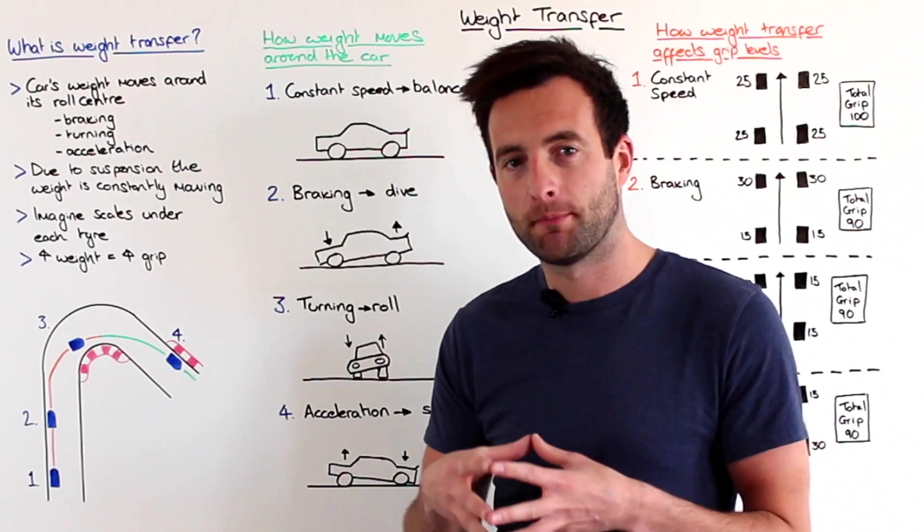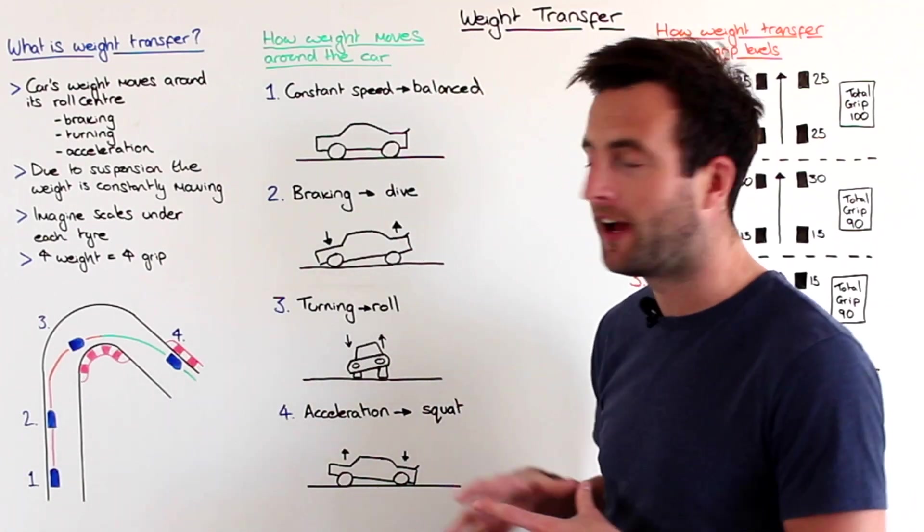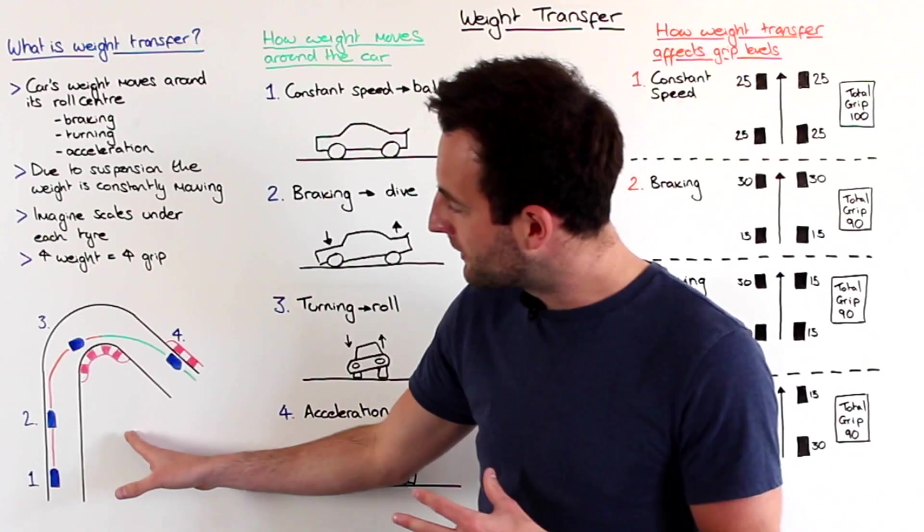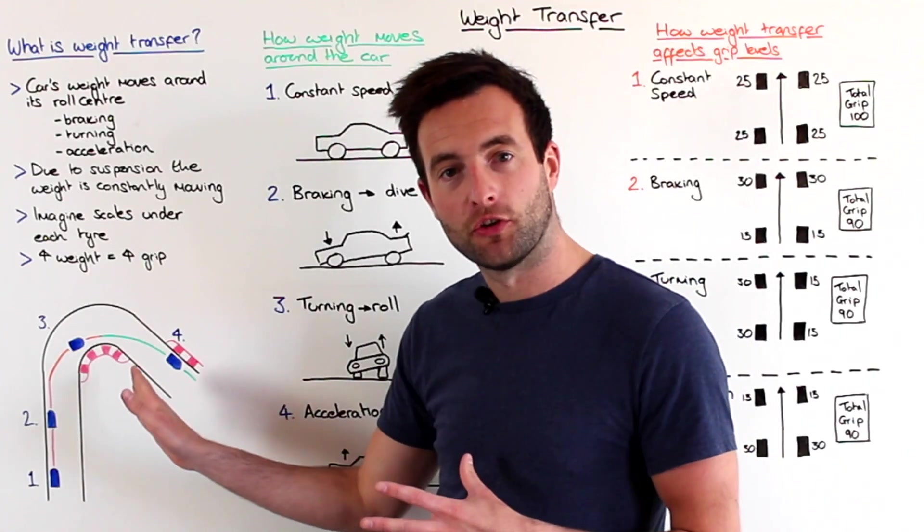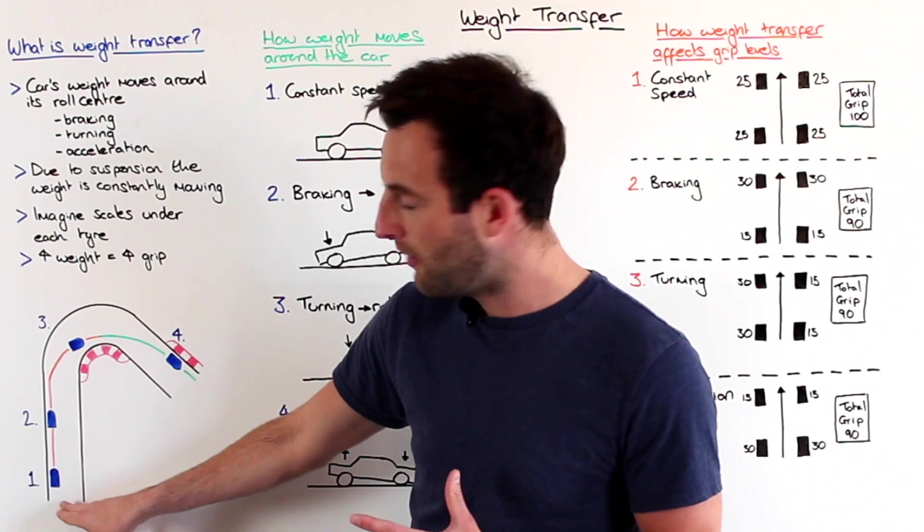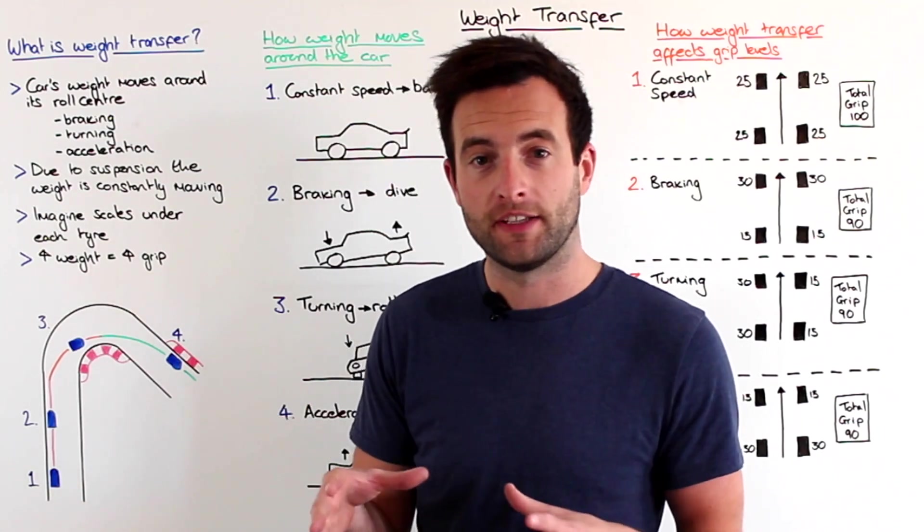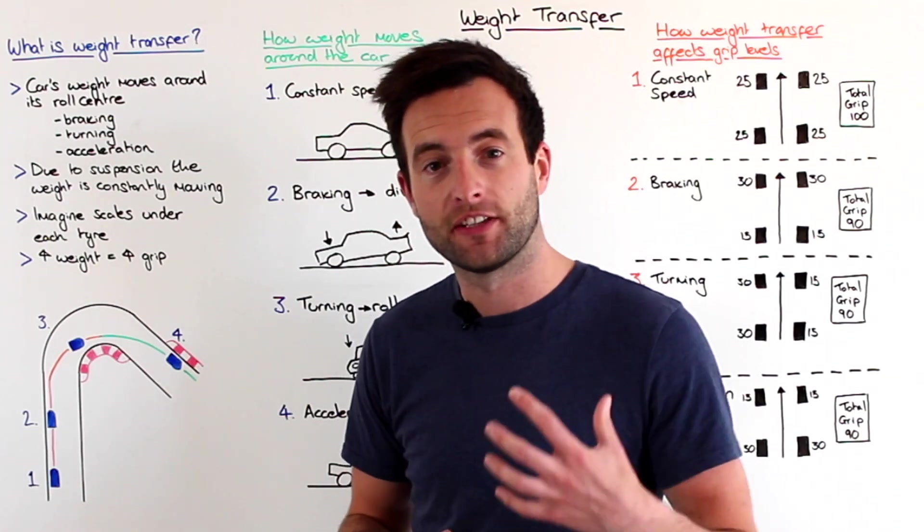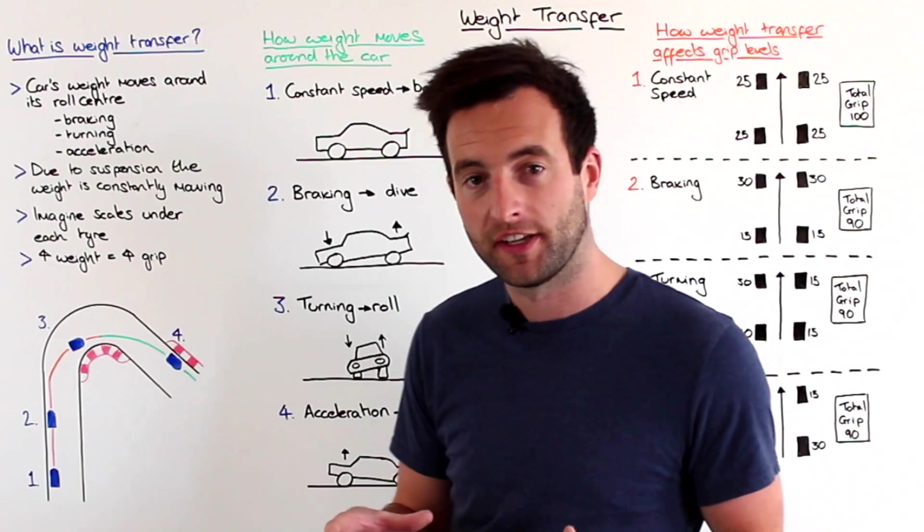So to better understand how weight moves around the car, we have a few diagrams here. As you can see we have a right hand corner here on this diagram with four stages. Arriving at the corner at a constant speed, so we're neither accelerating or decelerating and we're not turning at all.